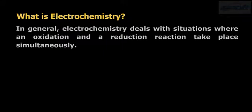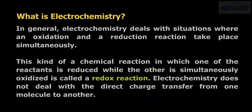In general, electrochemistry deals with situations where an oxidation and a reduction reaction take place simultaneously. This kind of chemical reaction, in which one of the reactants is reduced while the other is simultaneously oxidized, is called a redox reaction.